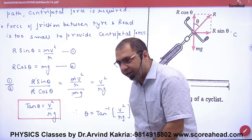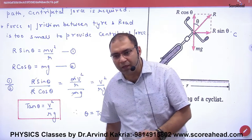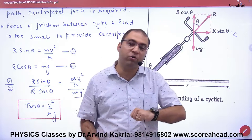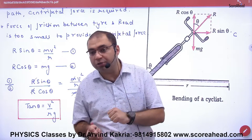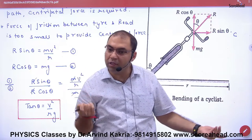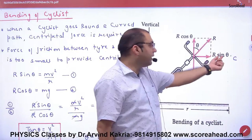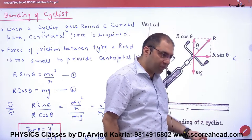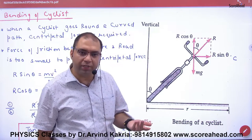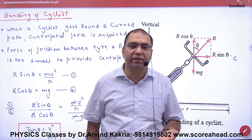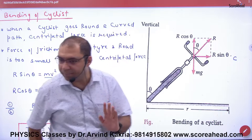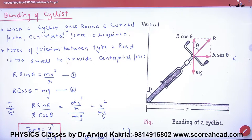This point is now clear. Imagine the cyclist bends — why does it bend? If it does not bend, then θ is 0, and R sin 0 equals 0, so the centripetal force is zero. Without bending, centripetal force is zero, and the cyclist cannot turn. This is the complete case of bending of a cyclist.